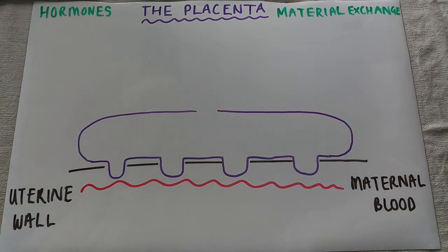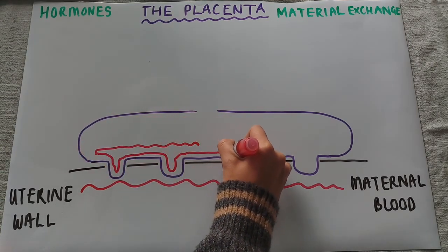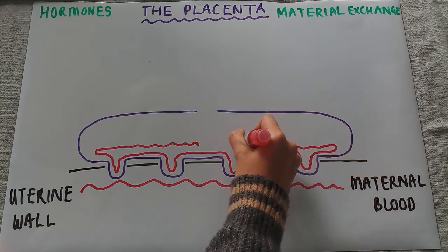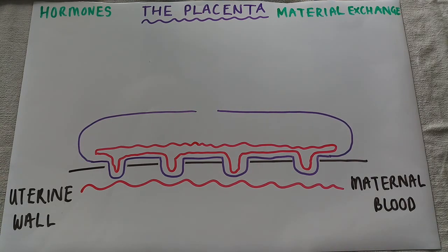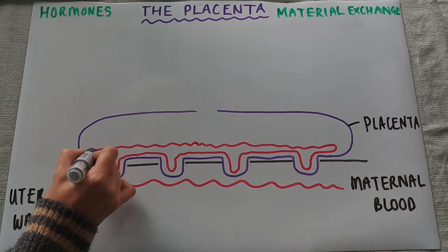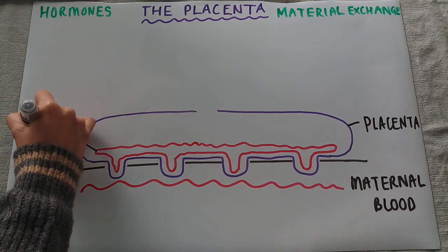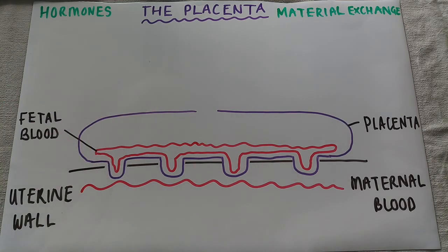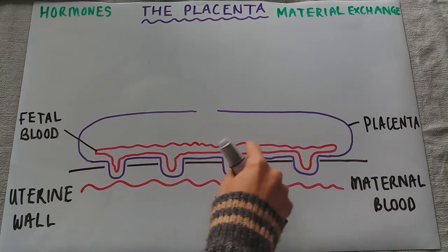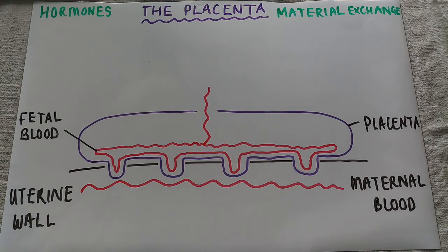Within the placenta, this contains fetal blood. The fetal blood goes down into these finger-like projections — the villi — that go into the uterine wall. This here is the placenta, and this here is the fetal blood. The blood going through the placenta down into each villi will then also go up to reach the developing fetus.